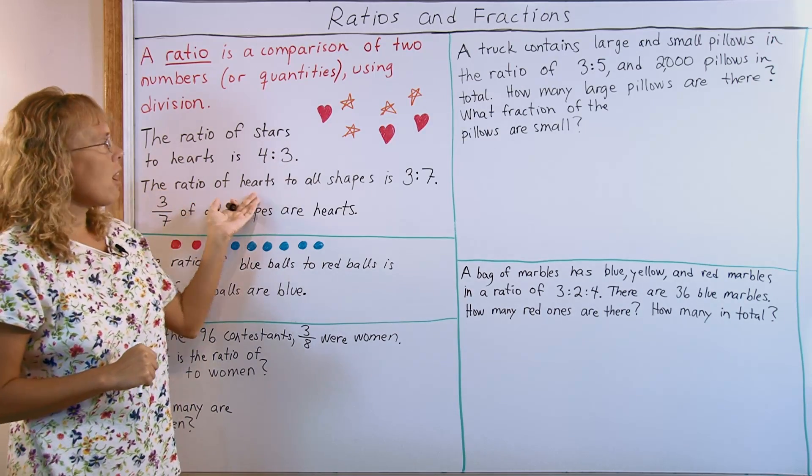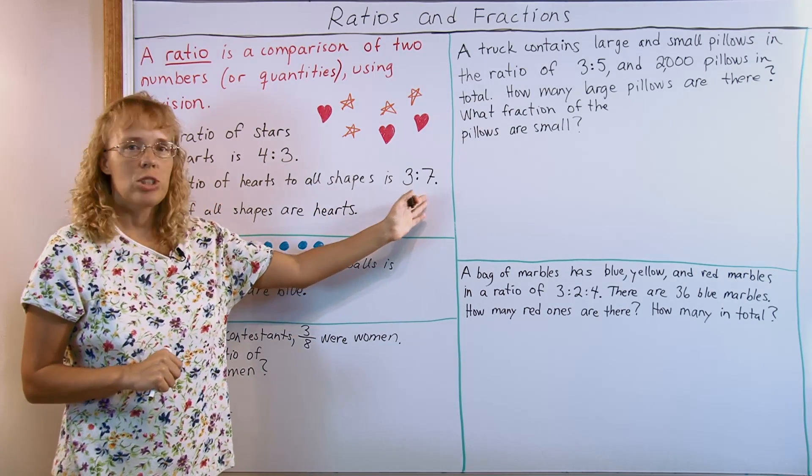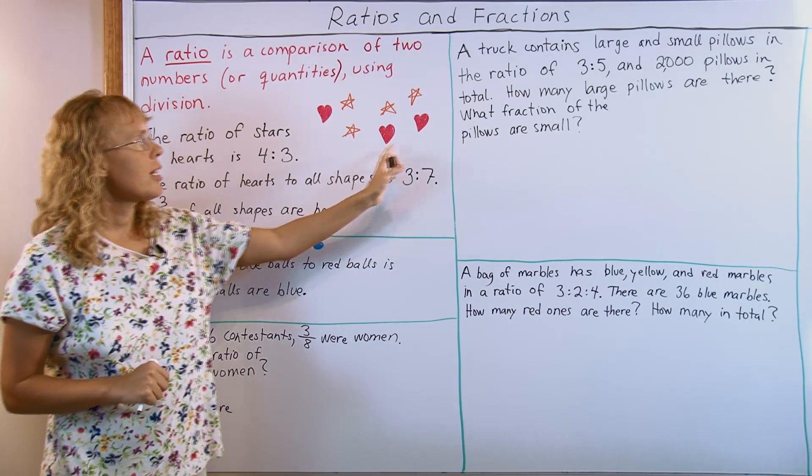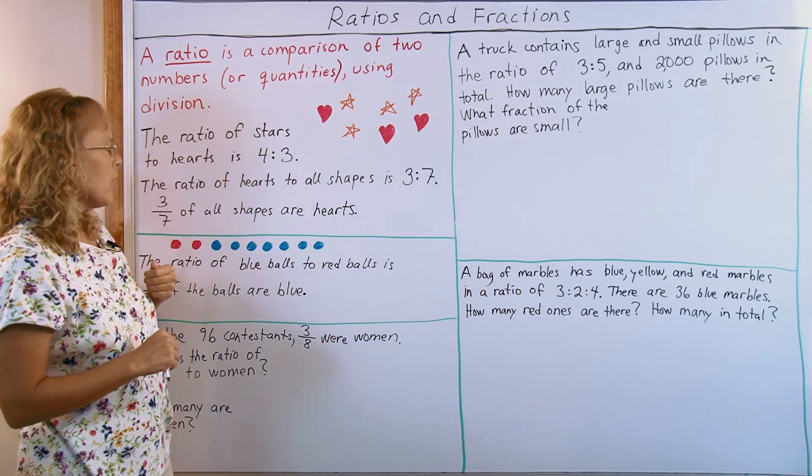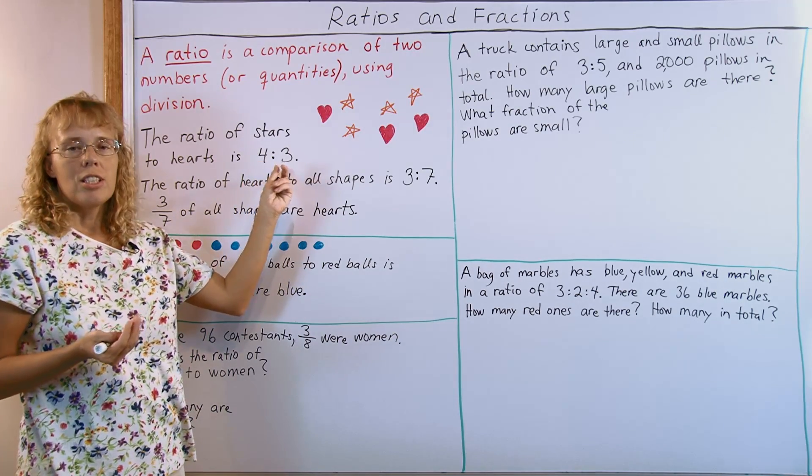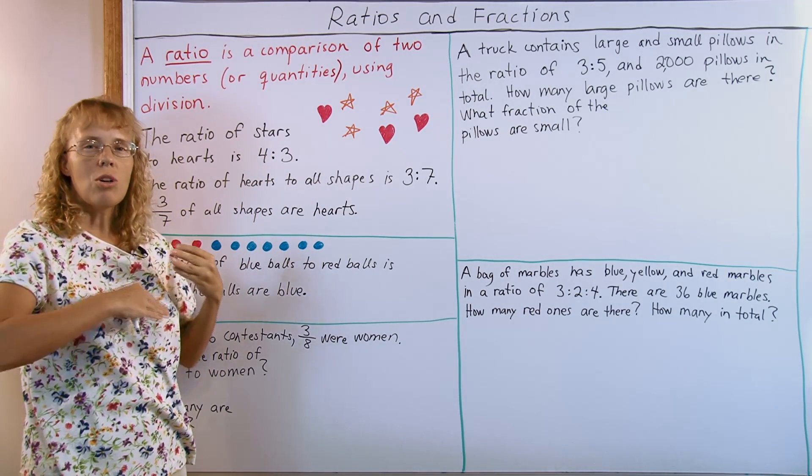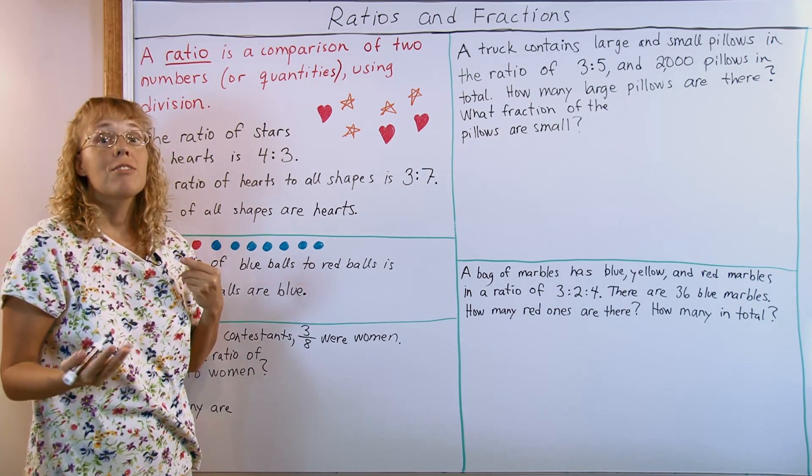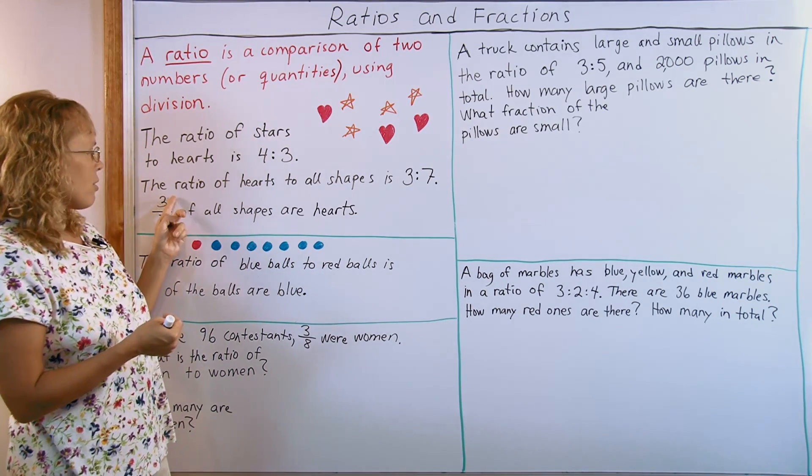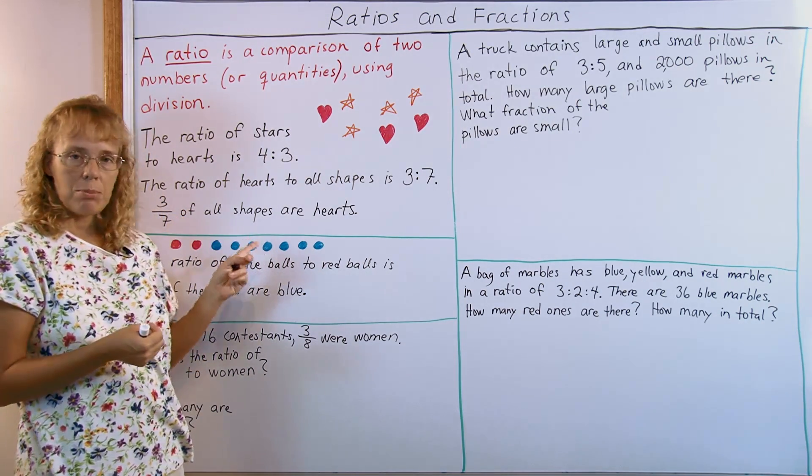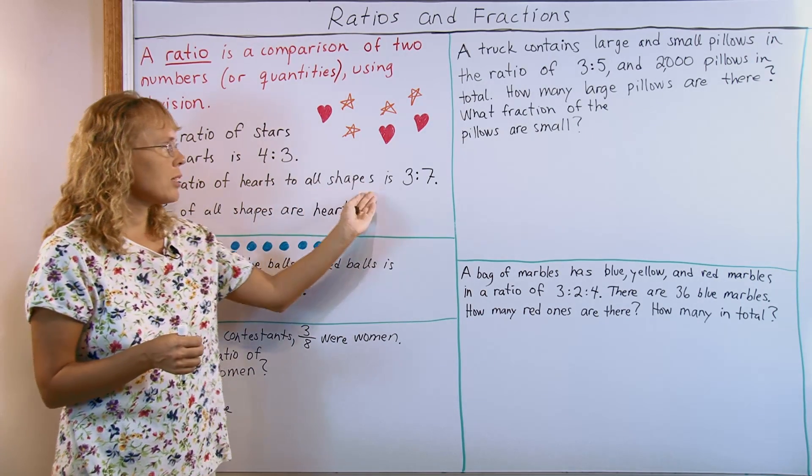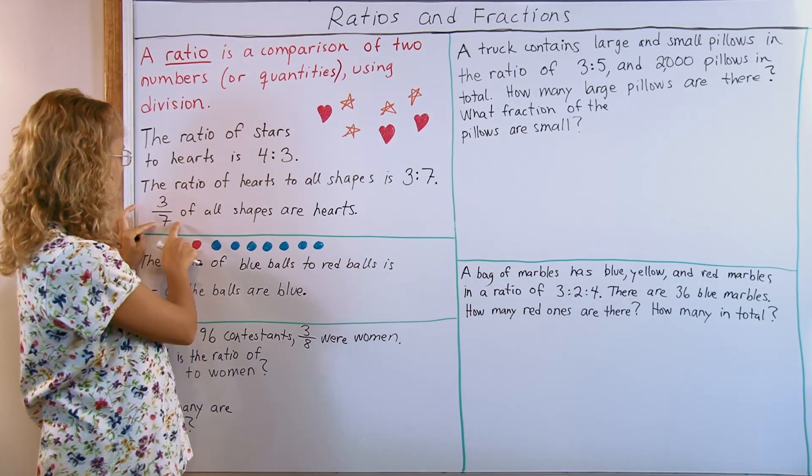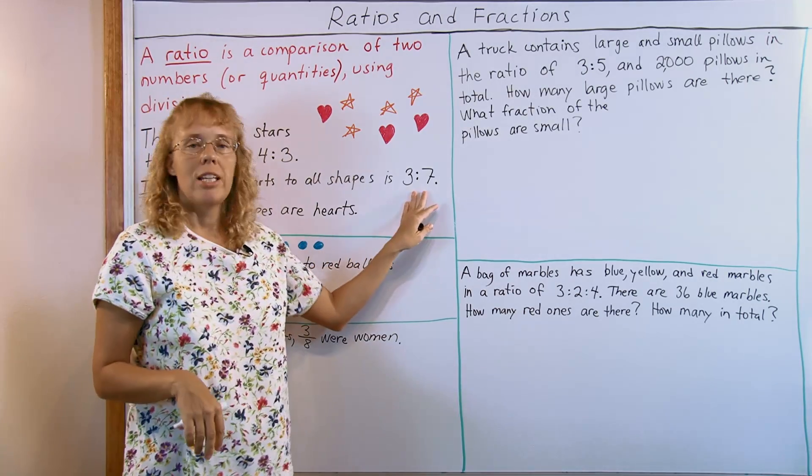Another example: the ratio of hearts to all shapes is 3 to 7, because there's 3 hearts and 7 shapes all total. Now, anything you say with ratio, you can then also convey the same information using fractions. For example here, 3 sevenths of all shapes are hearts, or the ratio of hearts to all shapes is 3 to 7. That's the same information. Here we just use a fraction, here we use a ratio.